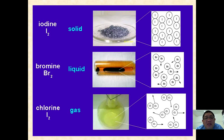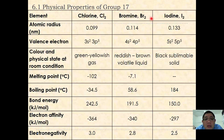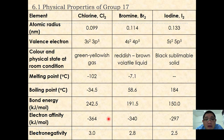Here you can see how the halogens physically look. Iodine is a black solid, bromine is a reddish-brown liquid, and chlorine is a yellow-greenish gas. When going down the group, atomic radius increases. Chlorine is a yellow-greenish gas, bromine is a reddish-brown volatile liquid, and iodine is a black sublimable solid. Melting point and boiling point increase down the group, however bond energy decreases, as do electron affinity and electronegativity.